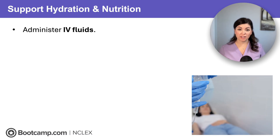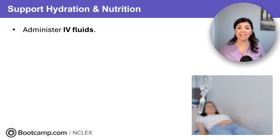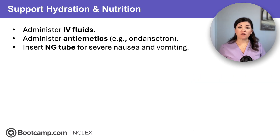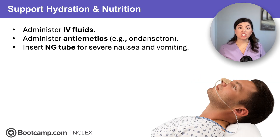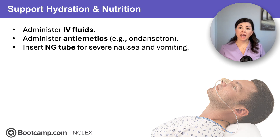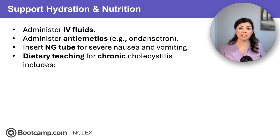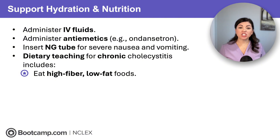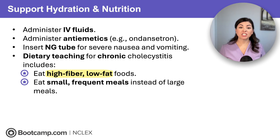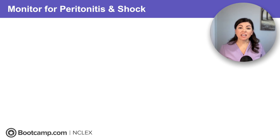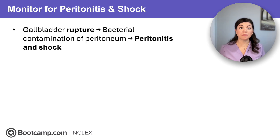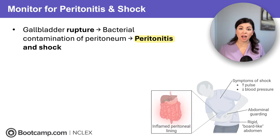Hydration is critical — administer IV fluids and antiemetics like ondansetron. If nausea and vomiting are severe, insert an NG tube for decompression. For chronic cholecystitis, dietary teaching is key. Clients should eat high-fiber, low-fat foods, avoid fast foods and fried foods, and eat small, frequent meals instead of large ones. If the inflamed gallbladder ruptures, bacteria can spill into the peritoneal cavity, causing peritonitis and shock.